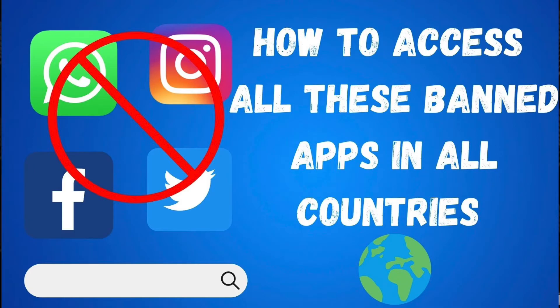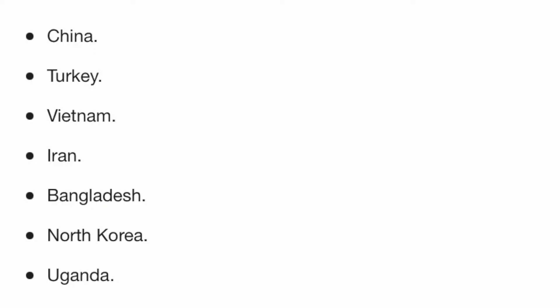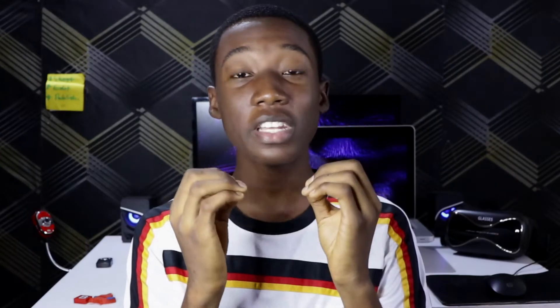So you can access these social media platforms. For example, countries like China, Turkey, Vietnam, Iran, Bangladesh, North Korea and Uganda — all these countries have blocked social media. So let's say you visit one of these countries and want to use WhatsApp, Instagram, Twitter or Facebook — you can't use them there. And I'm sure you need to contact your friends and family.